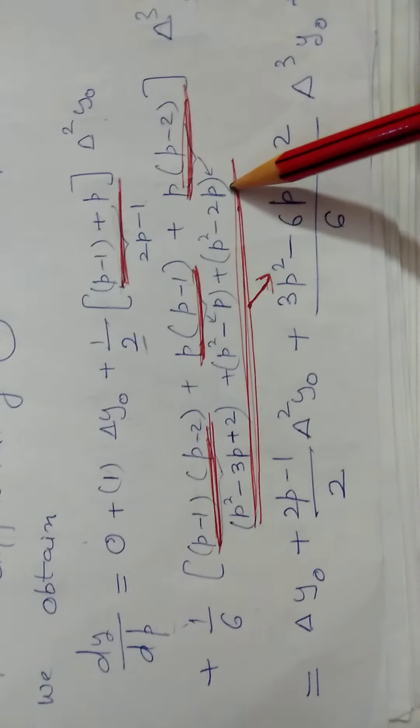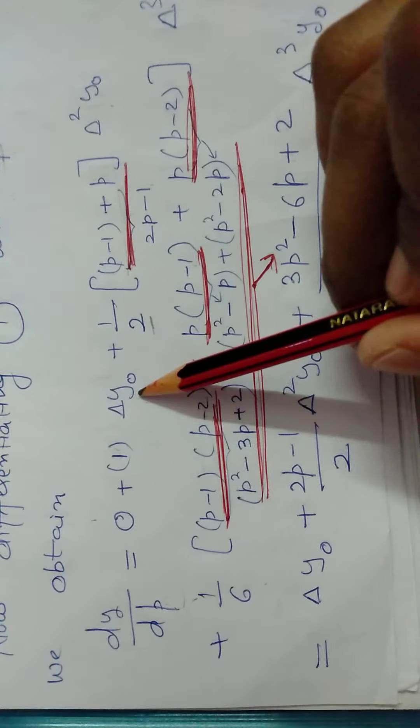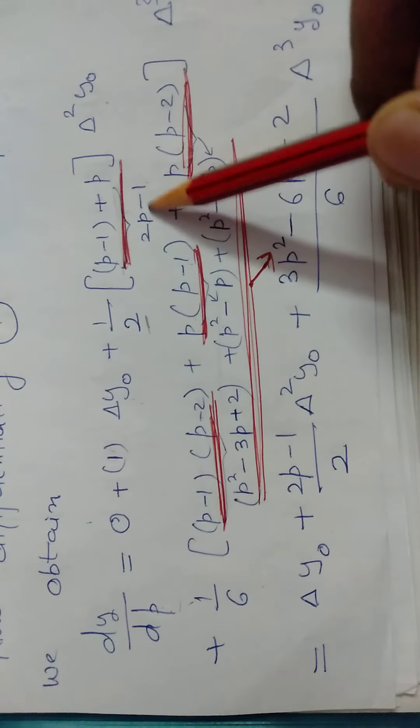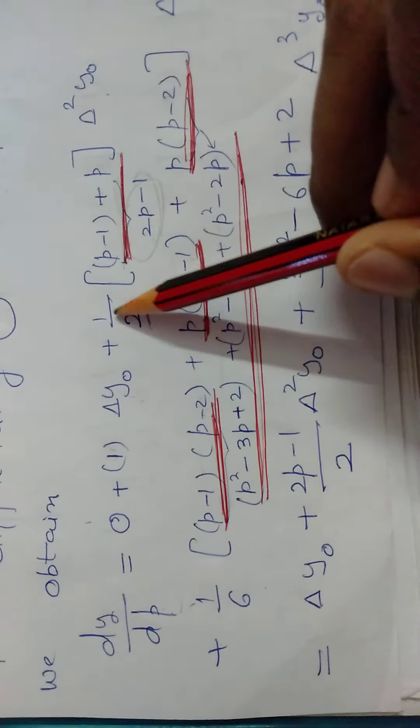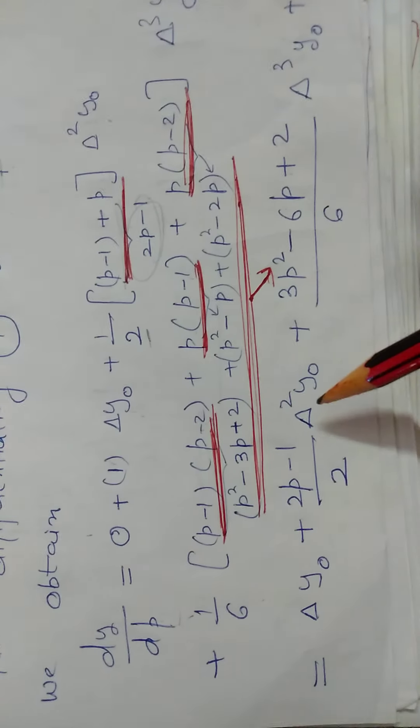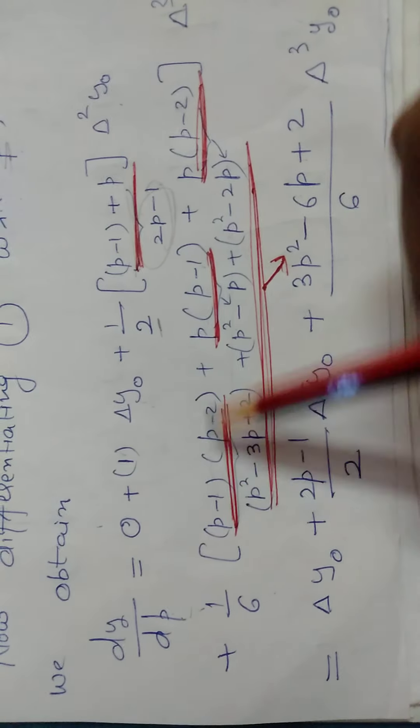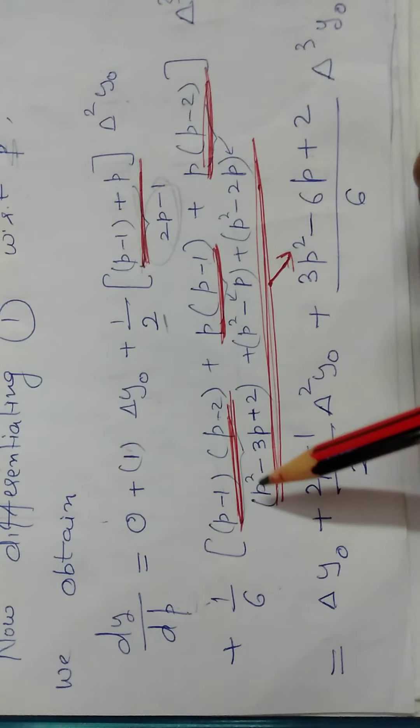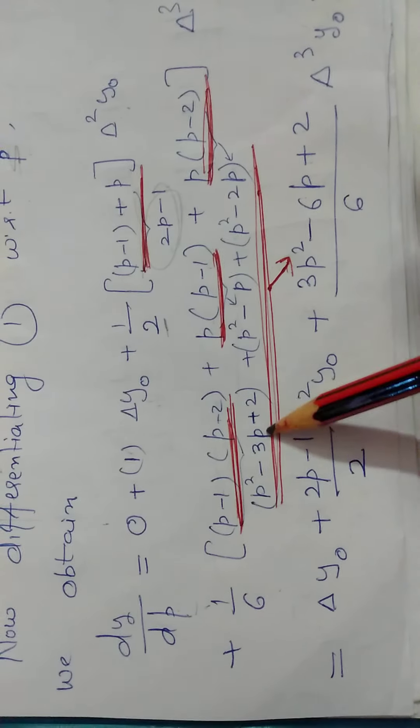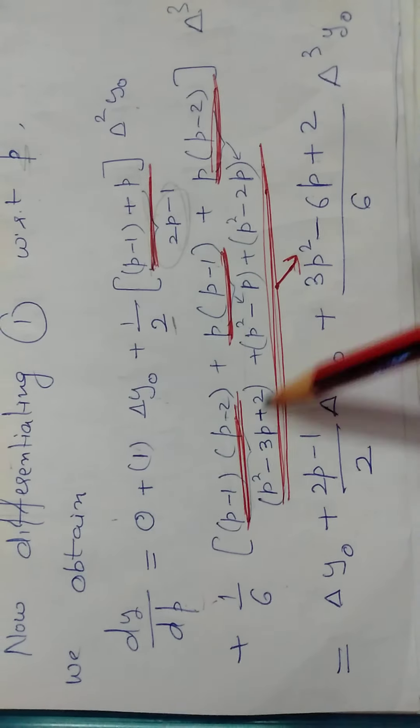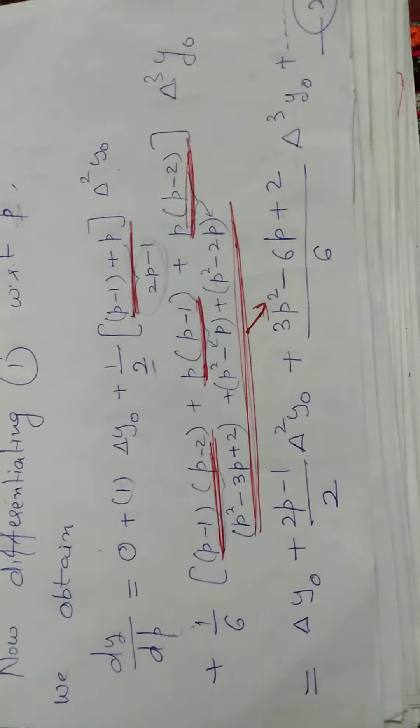So dy by dp becomes delta y naught plus the factor 2p minus 1 divided by 2 del square y naught. Then the full solution for this factor is 3p square minus 6p plus 2 divided by 6 del cube y naught and so on.